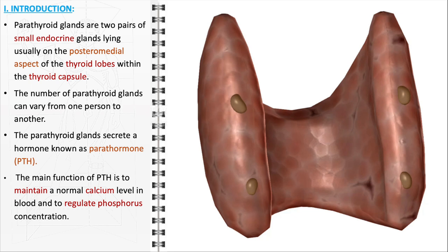PTH's main function is to regulate and maintain a normal level of calcium in the bloodstream, which is vital for various bodily functions, including nerve conduction, muscle contraction, and bone health. Additionally, PTH helps in managing the concentration of phosphorus, another mineral essential for bone strength and overall metabolic functions.